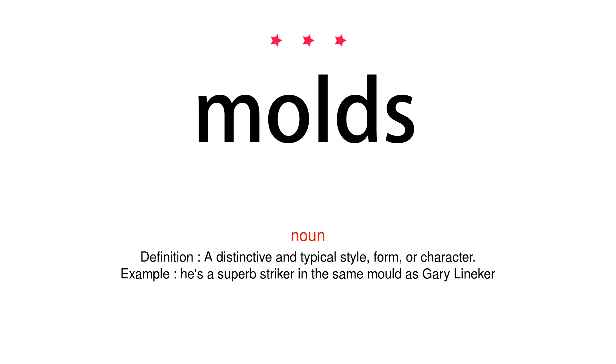Noun. Definition: A distinctive and typical style, form, or character. Example: He's a superb striker in the same mold as Gary Lineker.